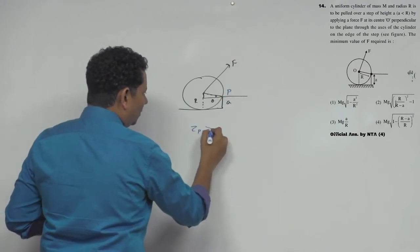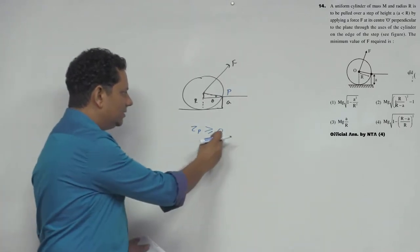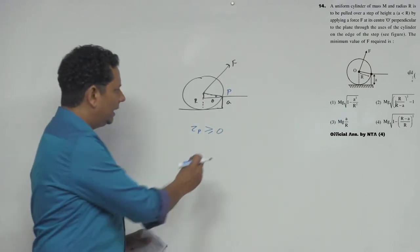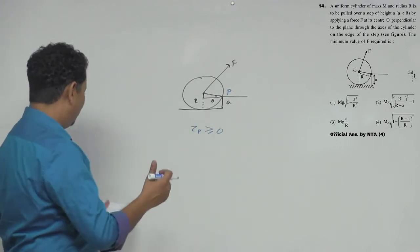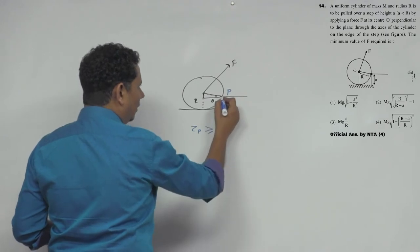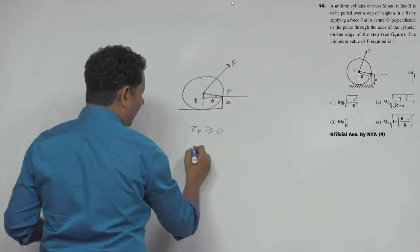The torque should be slightly greater than or equal to slightly greater than zero. Since we need the minimum value, we will equate it to zero. When we talk about torque, the torque from this force will be...